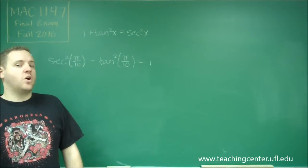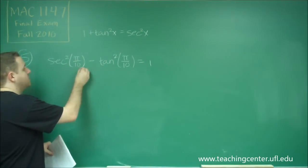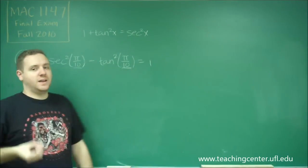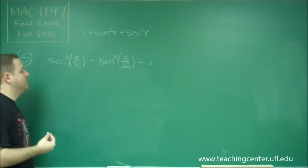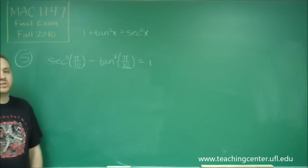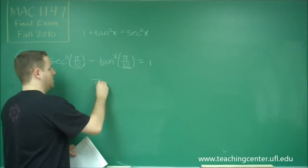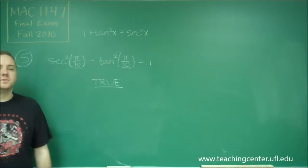So the only thing that you really have to check is, are the angles the same? Because the angles have to be the same for that identity to be true. They're both pi over ten, therefore this is true just by trig identity. So that one is going to be true.